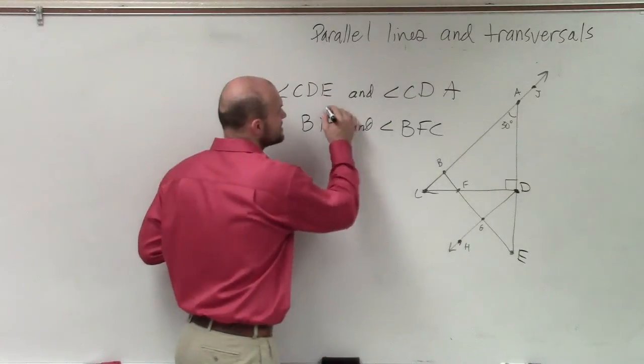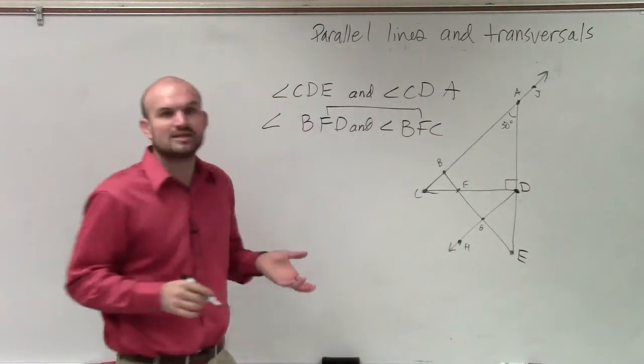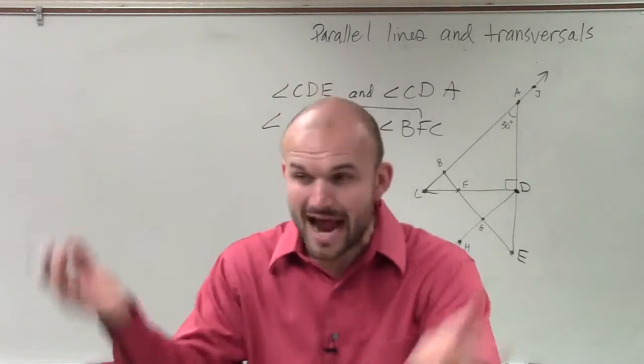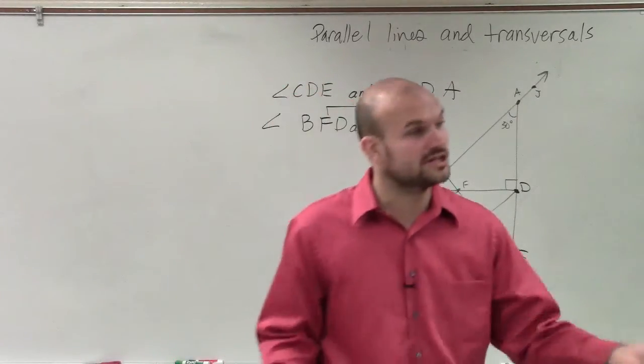So therefore, to know that these are adjacent, I know that those middle ones are going to have to be exactly the same. Does that kind of make sense? Because they have to share a vertex. They have to share that same vertex.